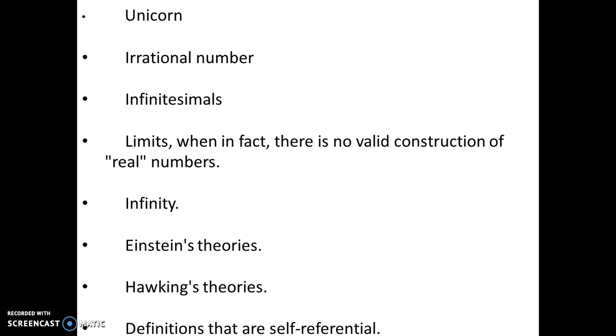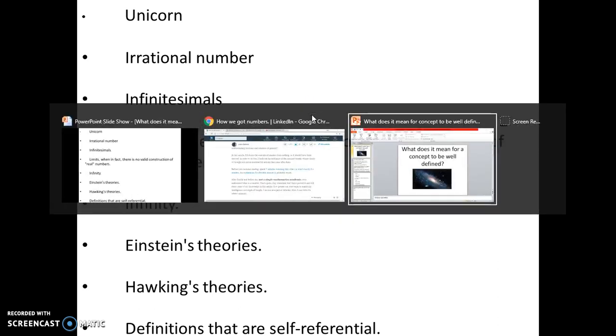Another example of an ill-formed concept is a limit, when there is no valid construction of real numbers. You'll often hear idiot professors tell you the real numbers are very well defined through equivalent Cauchy sequences, which is utter bullshit. They have no idea what is a number. They do not and have not ever understood what it means to be a number. And of course, infinity is another example, and it falls into the same category as infinitesimals.